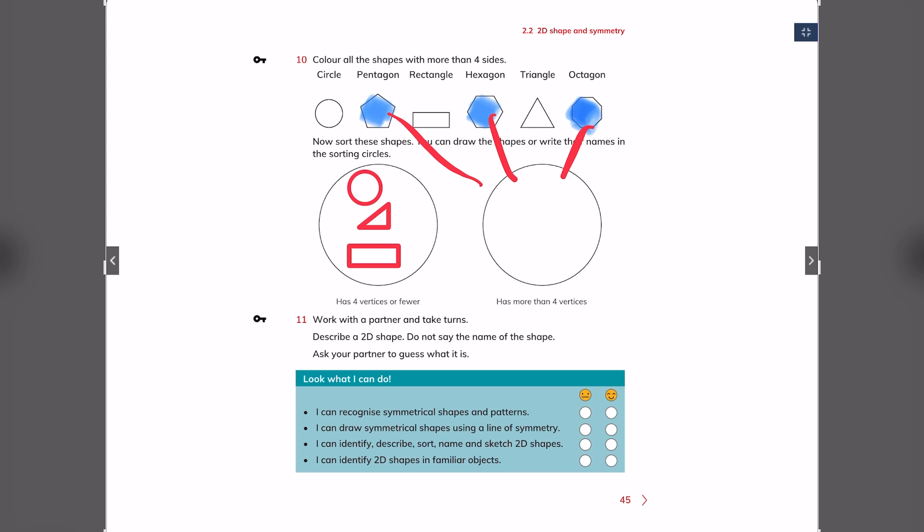Go to the last question, which is question 11. Work with a partner and take turns. Describe a 2D shape. Do not say the name of the shape. Ask your partner to guess what it is. For example, I am thinking of a 2D shape that have zero sides. What is this 2D shape? So the 2D shape with zero sides is a circle.